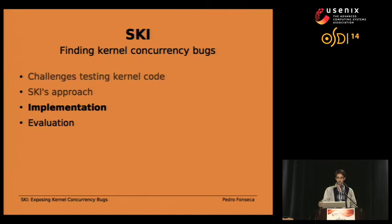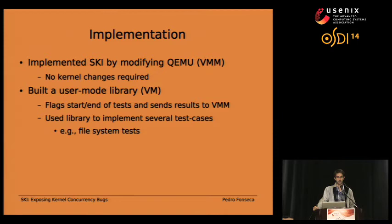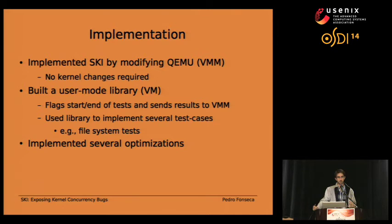We implemented Ski by modifying QEMU, a virtual machine monitor. Importantly, we did not have to modify the kernel being tested or even the host kernel. We also built a user-mode library that runs inside the virtual machine, used by kernel developers to create test cases that flag the beginning and end of tests. Using this approach, we built several test suites including a file system test suite. We also implemented several optimizations to ensure good performance despite the level of control we have over scheduled interleavings.